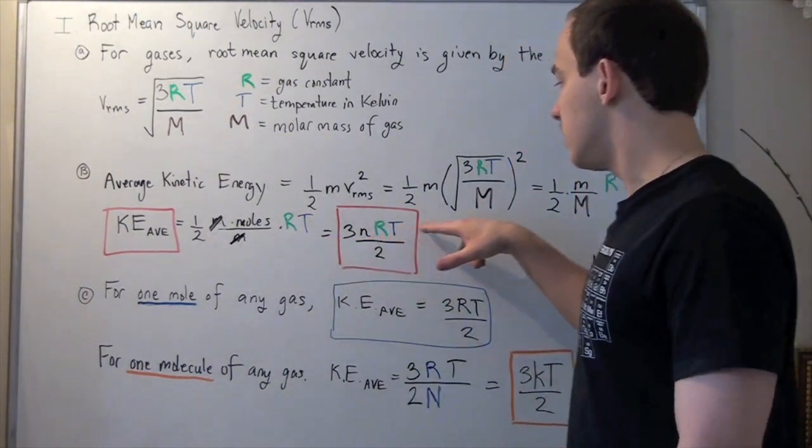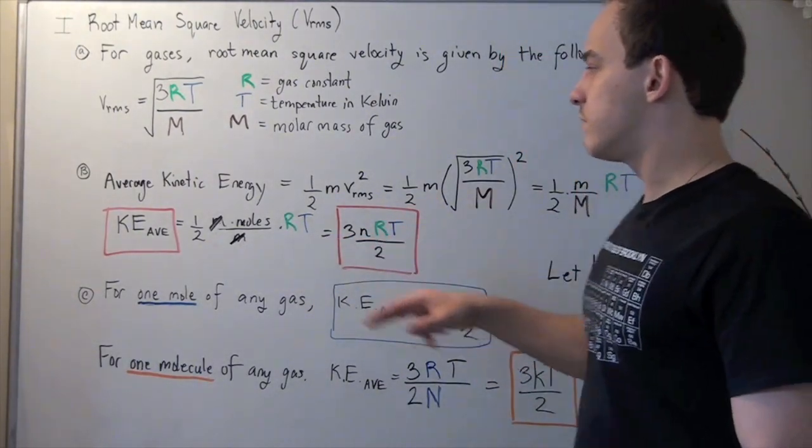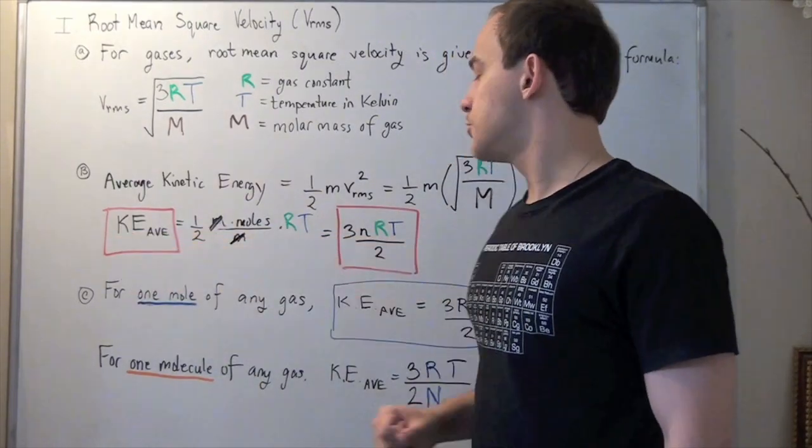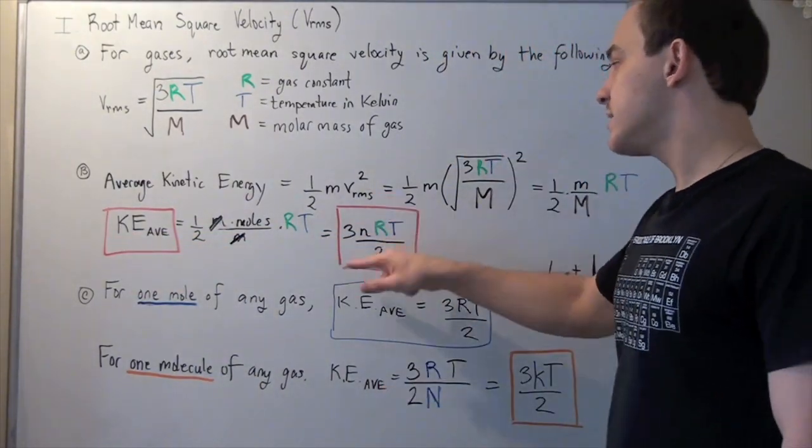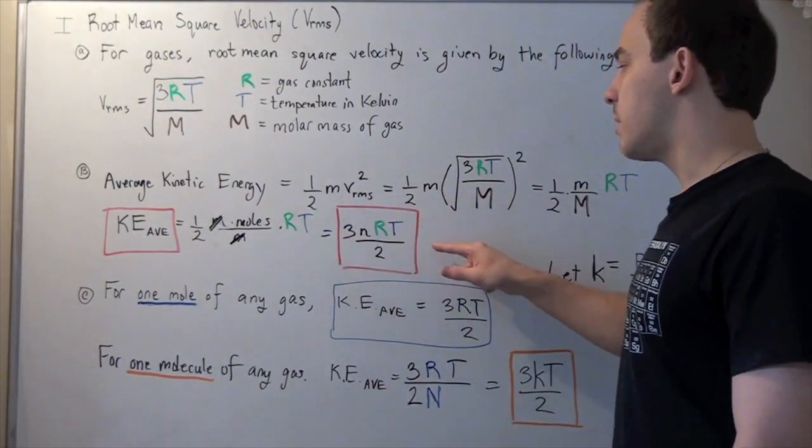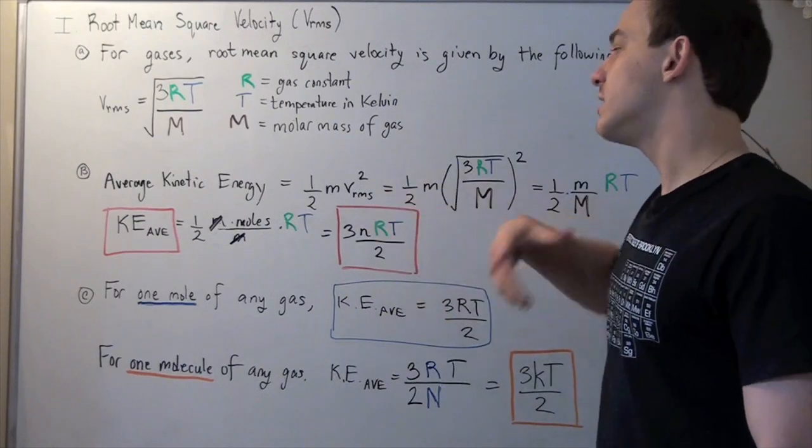So my final representation of my average kinetic energy is 3 times N times R times T divided by 2, where N is our number of moles.